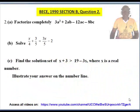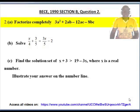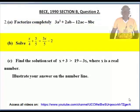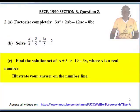BECE 1990 Section B, Question 2. (a) Factorize completely: 3a² + 2ab − 12ac − 8bc. (b) Solve: x/4 + 3/5 = 3x/5 − 2. (c) Find the solution set of x + 3 > 19 − 3x, where x is a real number.